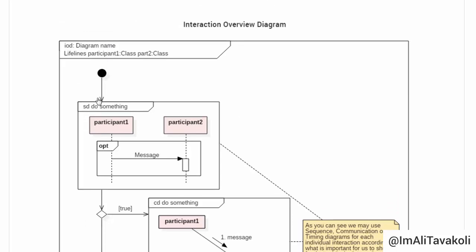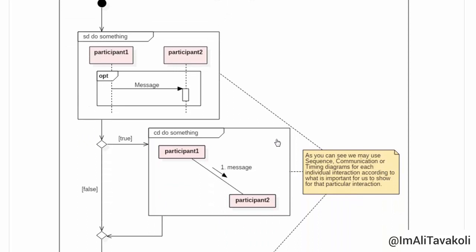But instead of Actions, we have Interactions here. As you can see. And in each Interaction, we have one of the Interaction Diagrams. I mean, Sequence, or Communication, or Timing Diagrams. It is based on what is important for us to show in that particular interaction.